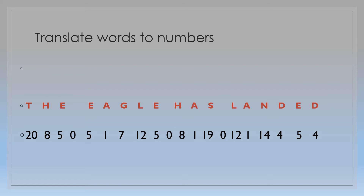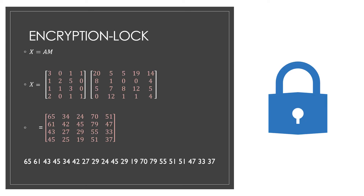Then we create the message matrix M using these numbers. I can write this as a 4-by-5 matrix since I have 20 elements. If running short of numbers, I can use a blank. Here X is equal to the product of A, the coded matrix, multiplied by the message matrix M. When I multiply, I get a 4-by-4 matrix. The encrypted message will be: 65, 61, 43, 45, and so on. This message will be sent to the receiver.